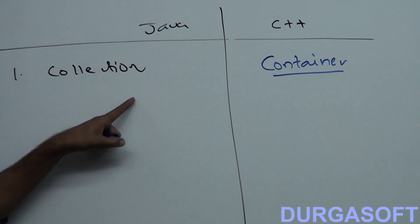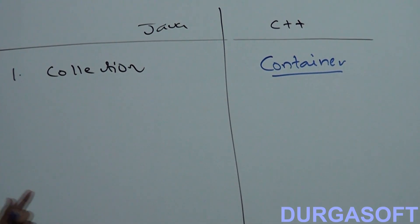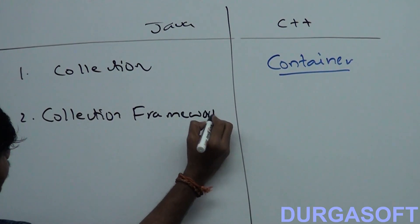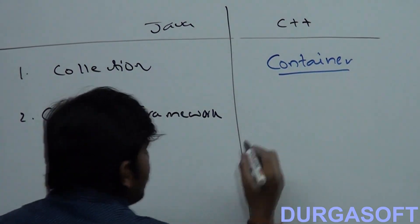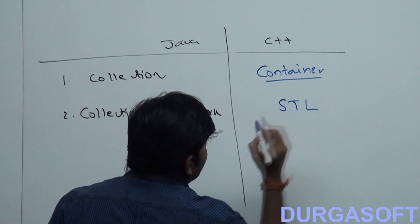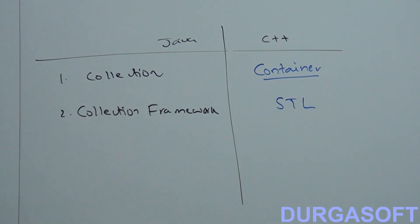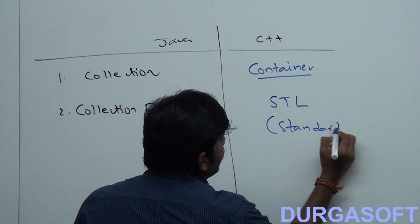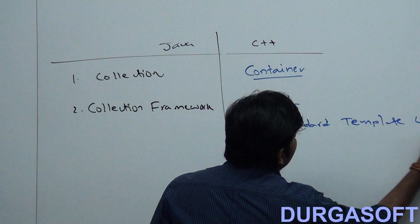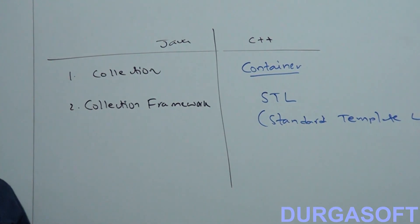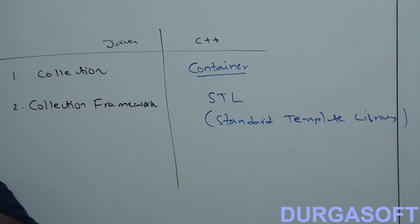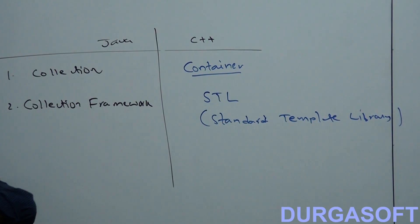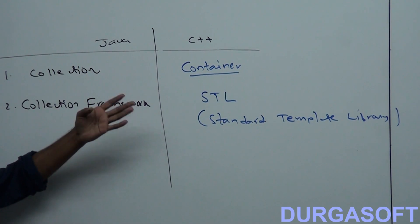In Java we use 'collection', while in C++ the equivalent concept uses the word 'container'. Similarly, in Java we have 'collection framework', but in C++ the equivalent terminology is STL — Standard Template Library. So don't feel that collection and collection framework are new concepts in Java. They are already there in older languages like C++ with different terminology. The words are new, but the concept is an old one.